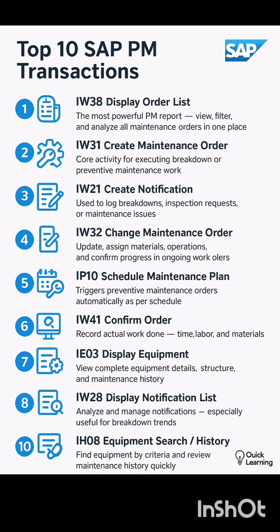Let's discuss the top 10 SAP PM transactions. Number 1 is IW38 — display orders list. IW31 is used to create maintenance orders. IW21 is used to create notifications. IW32 is to change maintenance orders. IP10 is to schedule maintenance plans. IW41 is to confirm orders. IE03 is used to display equipment. IW28 is to display notifications list. And last but not least, IH08 is used for equipment search or history.